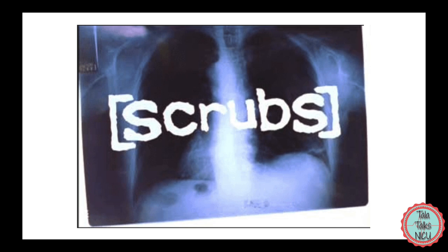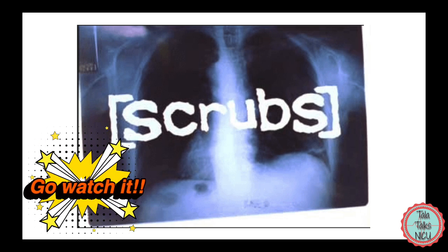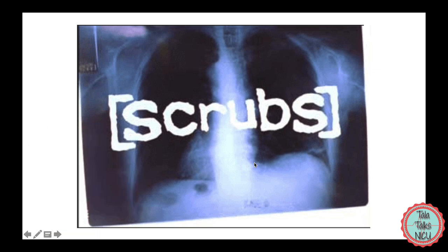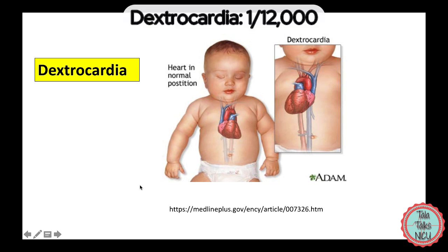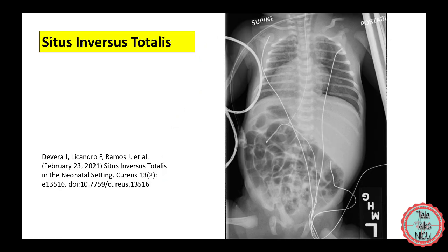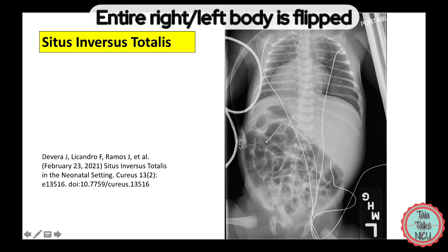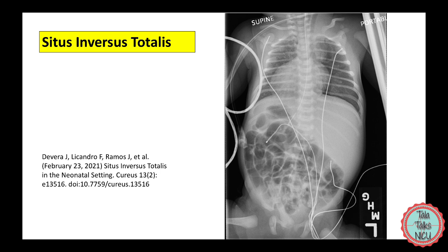Now let's start with this x-ray, which was shown at the start of each Scrubs episode — arguably the funniest and most realistic medical show ever. The heart is pointing to the right instead of the left. This is what we call dextrocardia, a general term meaning the heart is on the right side of the chest. It happens in about one in 12,000 births. Sometimes we miss these on x-ray because we assume the x-ray was taken prone instead of supine, which is why it's so important that x-rays are labeled.